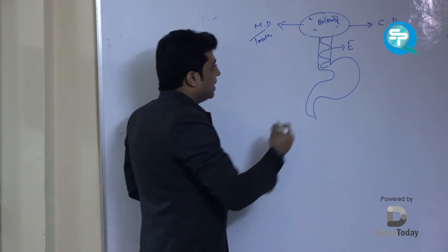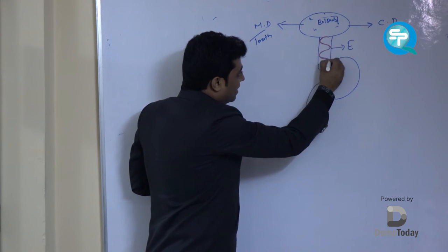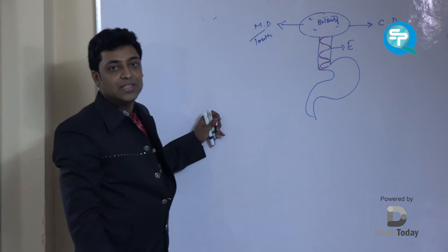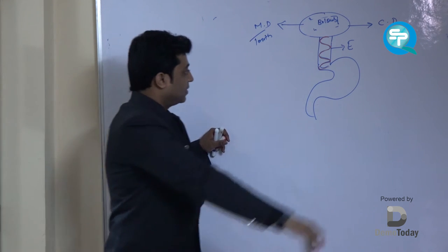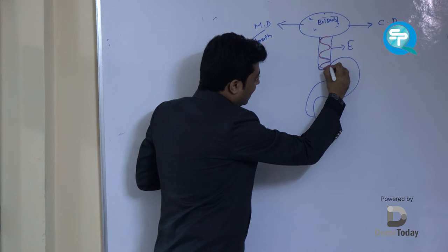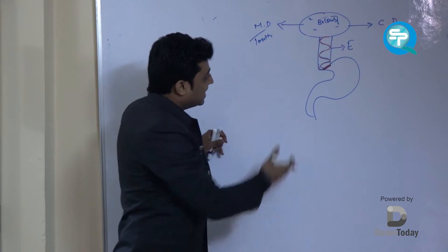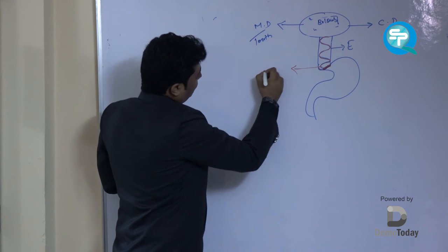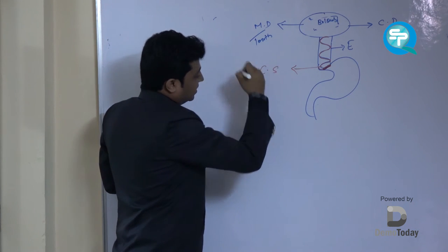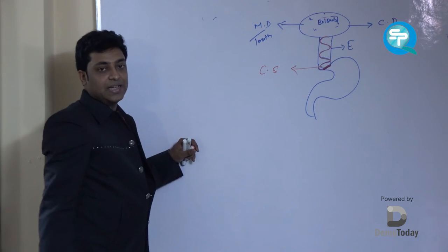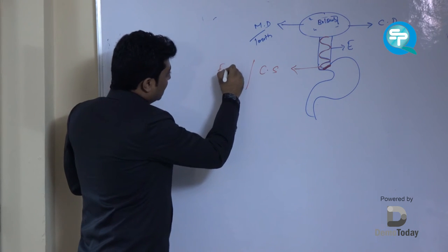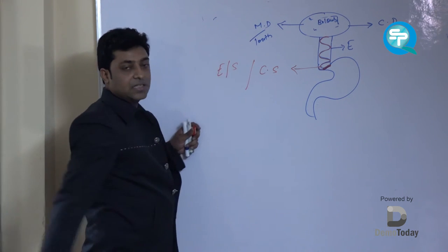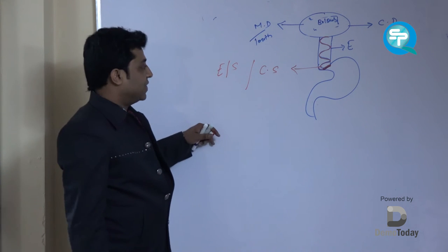What is peristaltic movement? It is nothing but rhythmic contraction and relaxation of esophagus muscle. After that we have one muscular structure at the end of the esophagus and the beginning of the stomach. That is known as cardiac sphincter, also known as esophageal sphincter.